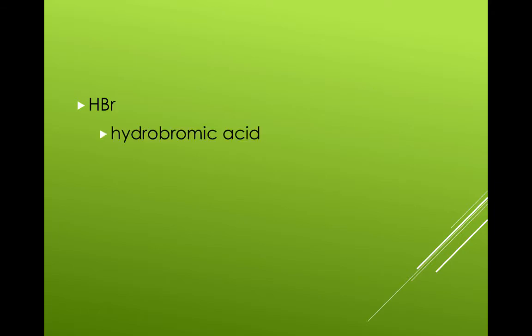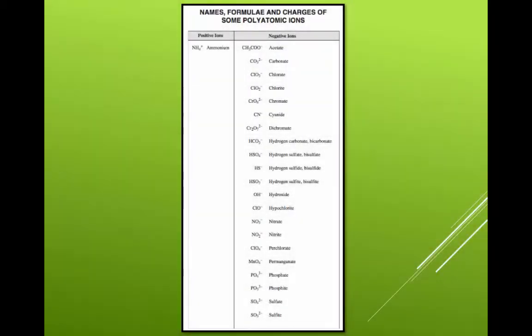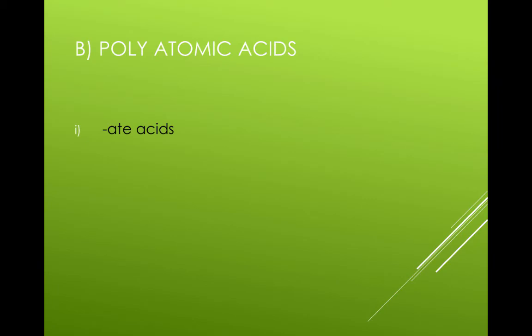The second type of acid is polyatomic acids. There are two types, the polyatomics ending with ate and the polyatomics ending in ite. First, let's look at the ate ending polyatomics.